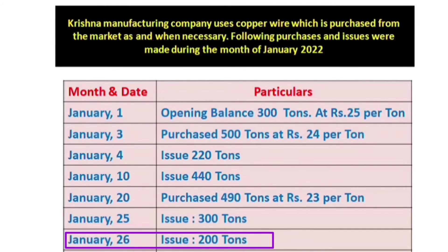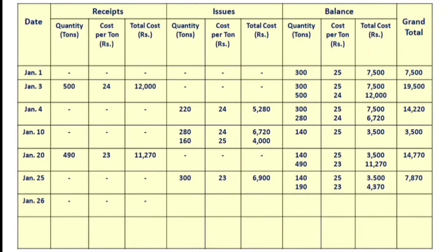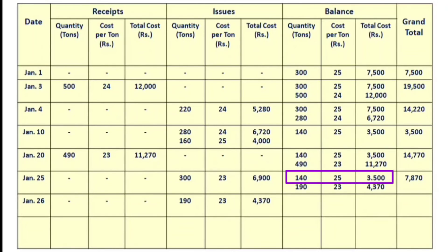For January 26th, we issue 200 tons. There is no new receipt. Our current stock is 190 tons at Rs.23 and 140 tons at Rs.25. Using LIFO, we take 190 tons at Rs.23 first, then the remaining 10 tons from the 140 tons at Rs.25. After this issue, the balance is 130 tons at Rs.25, totaling Rs.3,250.